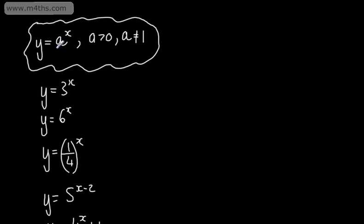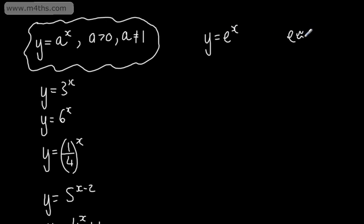We say this is an exponential function. Later you will meet the exponential function y = e^x. Here e is approximately 2.718 — it's just a constant, just a number. That will come in a later topic.